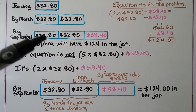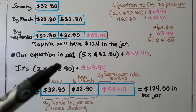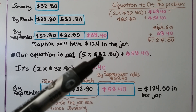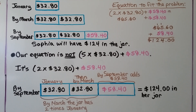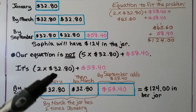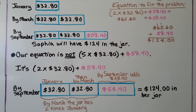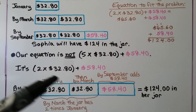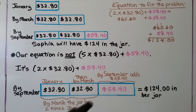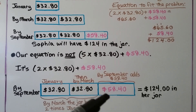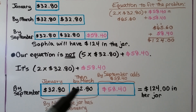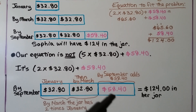Be careful — there appear to be 5 boxes that contain $32.80, but our equation is not 5 times $32.80 plus $58.40. It's only 2 times $32.80 plus $58.40. January was $32.80. By March, the jar had 2 times January, so that is the new amount. By September, we add the $58.40 she contributed. We have 2 boxes each containing $32.80, plus the $58.40 added by September, giving Sophia $124 in her jar.